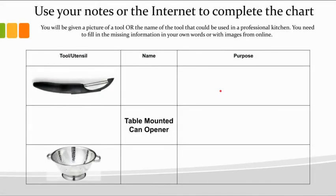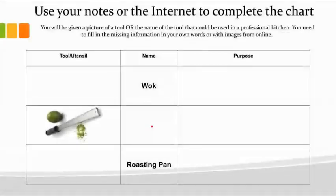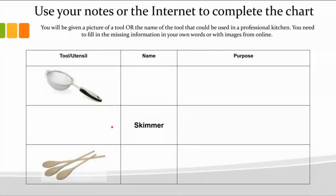Your assignment is going to require you to use some of your notes and some of the internet as well. I've either given you a picture of a tool or I've given you the name, and then you need to fill in the missing information. Some you can find in your notes; others you're going to have to use Google Images to look for. There's a total of five slides, and when you're done, just hit turn in. If you have any questions, email me or join the web meeting later this week.